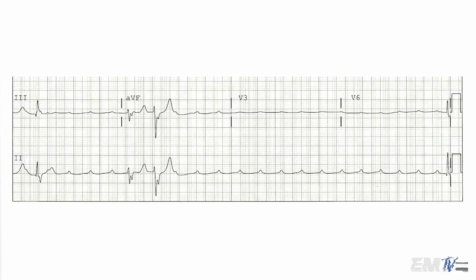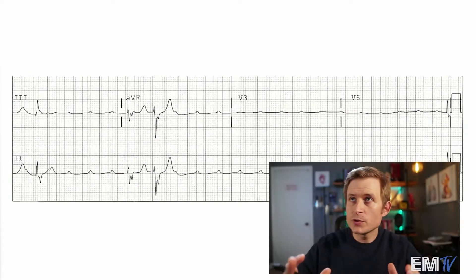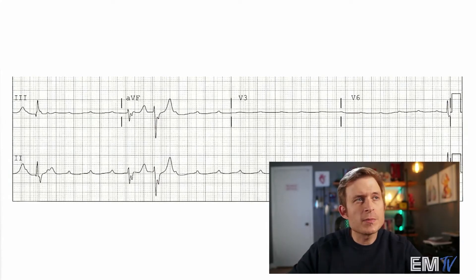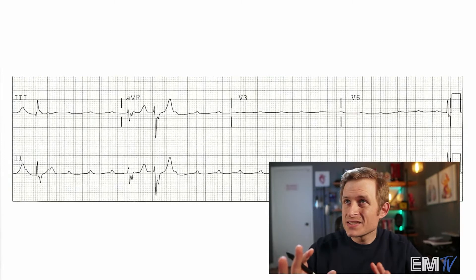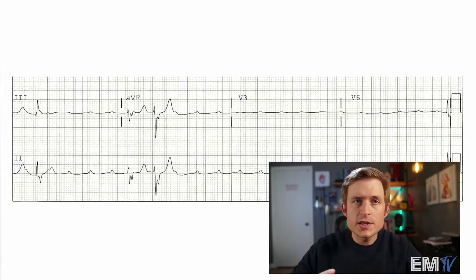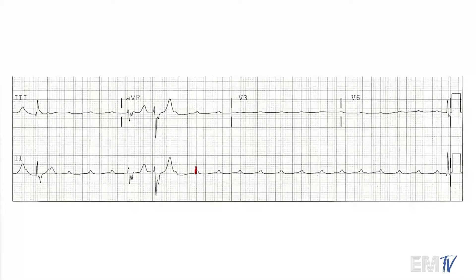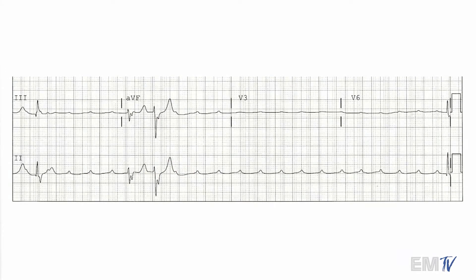Very slow. Now at first glance this rhythm may appear to be a 2nd degree type II heart block because you're seeing P waves that don't have any QRS complexes associated with them. Now this actually isn't a 2nd degree type II. If you look closely here we can follow the P2P interval and you'll see that it's actually a 3rd degree heart block. We can assume that there's a P wave buried in this QRS complex, and another buried in the one before it.